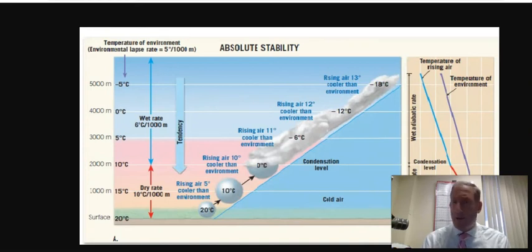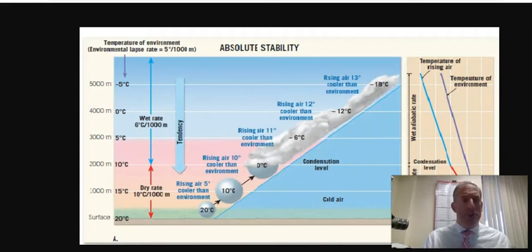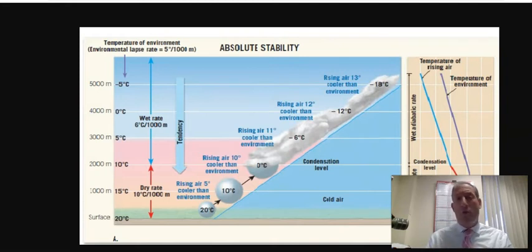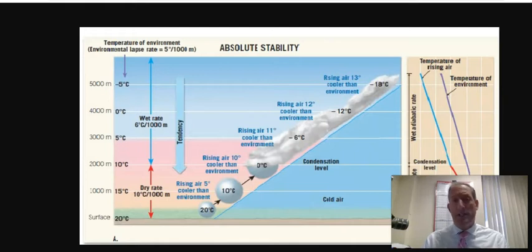Hello everyone. Professor Hoffman here, talking about Chapter 4 and stability of air masses — looking to see if air is going to rise or sink. Chapter 4 is the most difficult chapter in the book because we have to work with a couple of different variables. Please read over pages 96 to 105, especially the diagrams on pages 100 to 103.